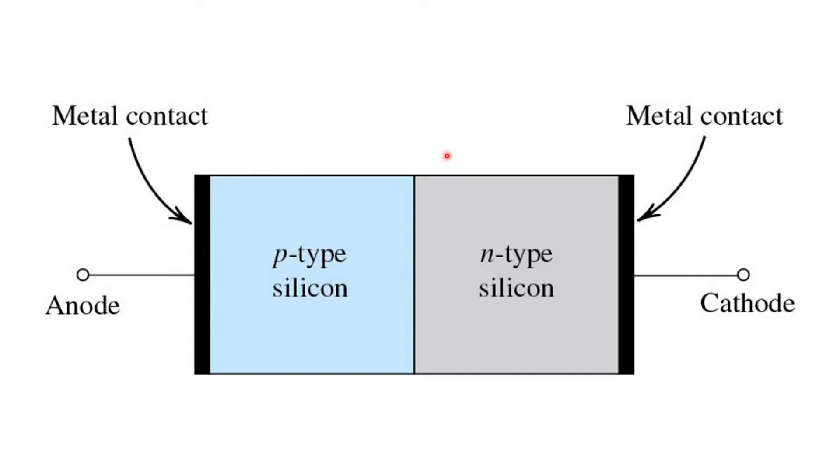It's formed by starting with a piece of silicon and doping one region of it P-type, introducing acceptor dopants, and a neighboring region N-type, by introducing donor dopants.